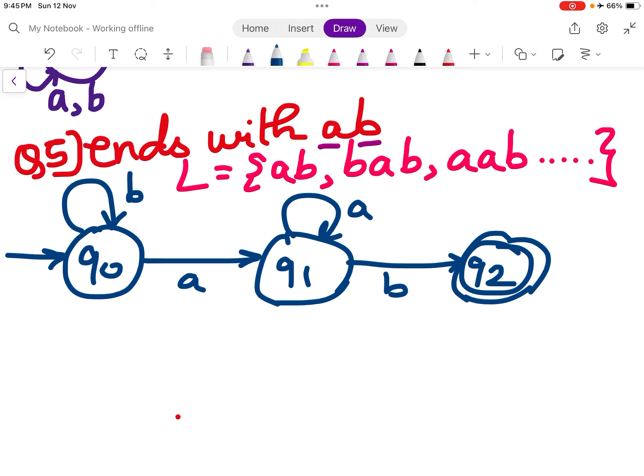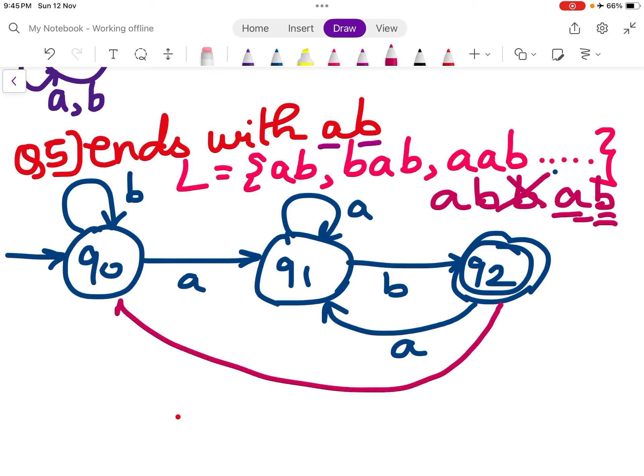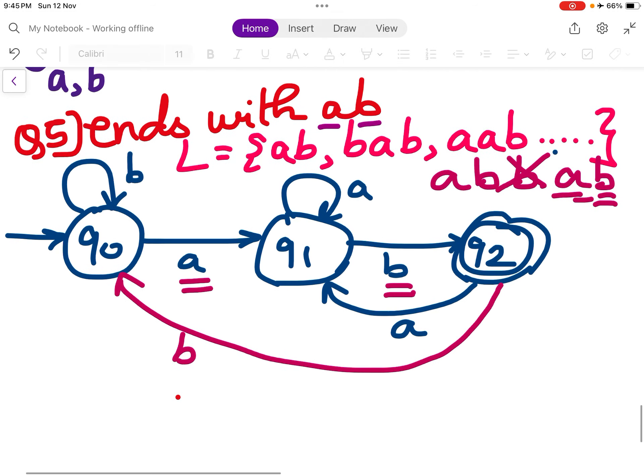Then in Q2 if I see an A then I need to see an A, a B. So I go here because the next transition is B. In Q2 if I see a B then it is A, B, B. This is not valid. I need to see an A followed by a B. So in Q2 if I see a B, I go to Q0 because I have to see an A followed by a B.